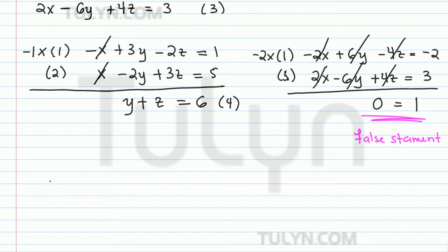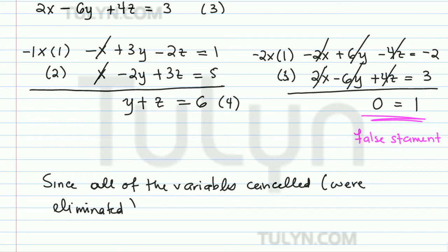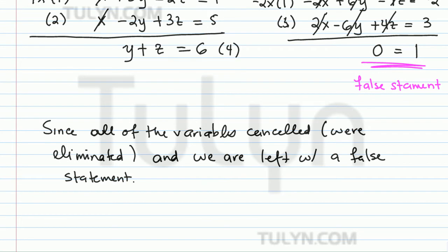So as it turns out, since we have a false statement, since all of the variables cancelled, or were eliminated in other words, and we are left with a false statement, we have what's known as an inconsistent system.